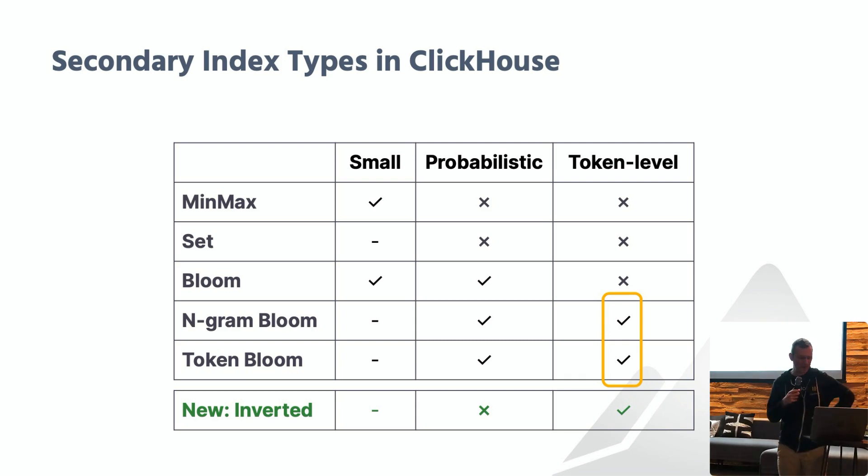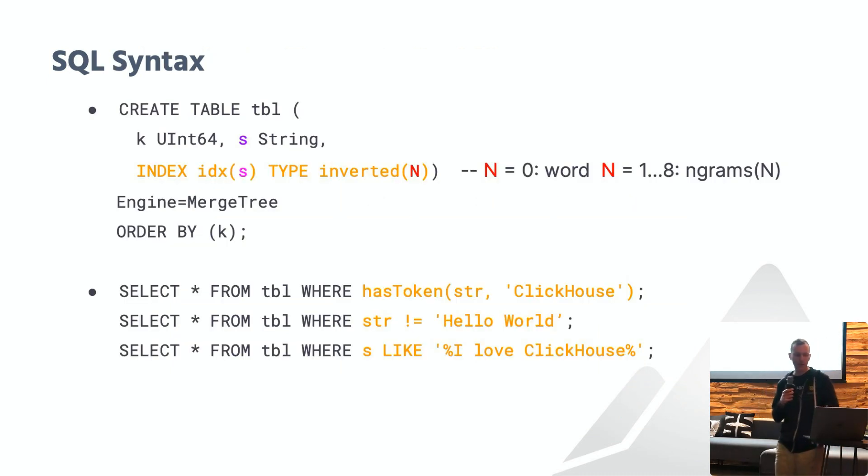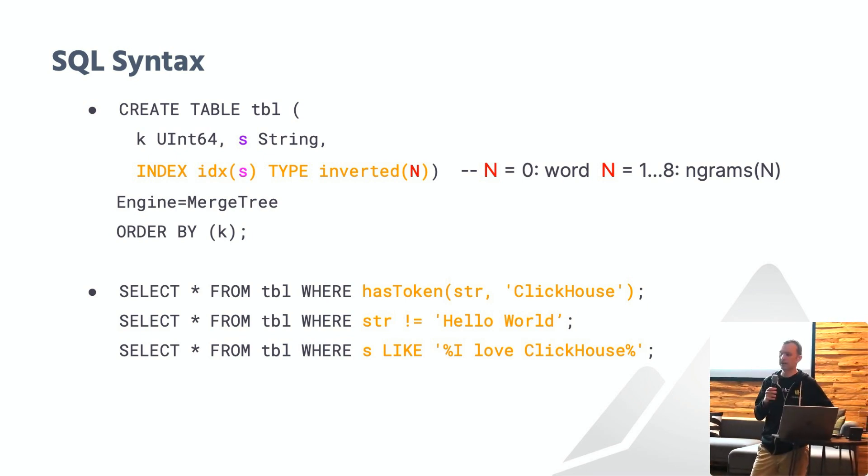Inverted indexes solve this problem. They are non-probabilistic token level secondary indexes and can be used without any of the previously mentioned restrictions in a rich set of queries. Here's the SQL syntax to create an inverted index over a document column. It's really simple. You just add the inverted index as a normal secondary index. You can also specify the tokenizer, which determines whether the index should operate at word or engram level. The exact syntax for that will become more user friendly hopefully soon.